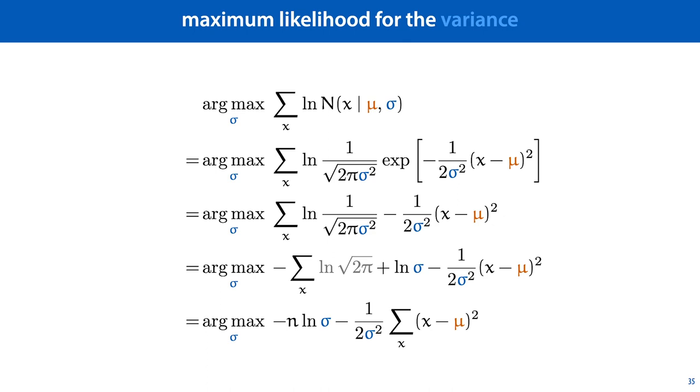The second term, the logarithm of sigma, exists inside a sum over x, so this is simply n times the logarithm of sigma. This is how far we can simplify our objective function.